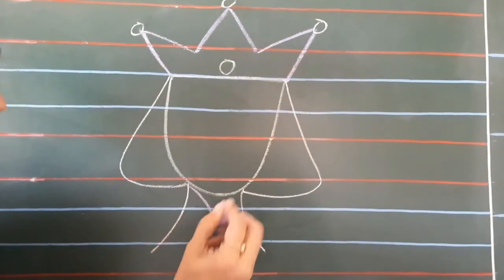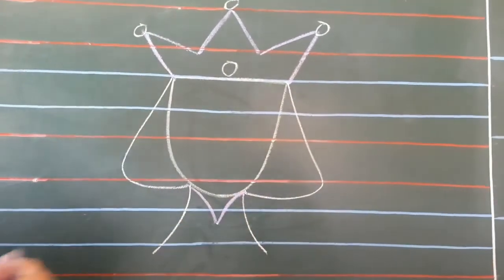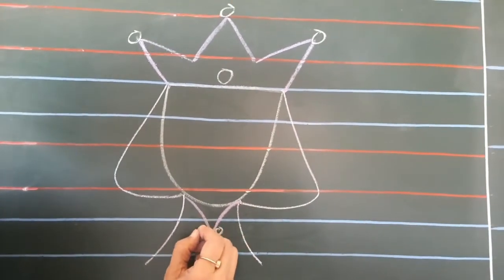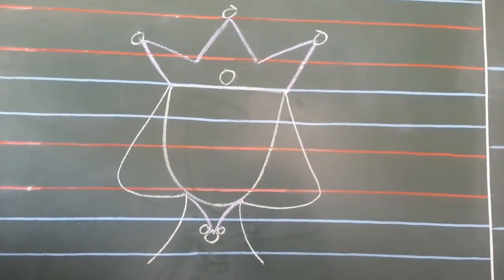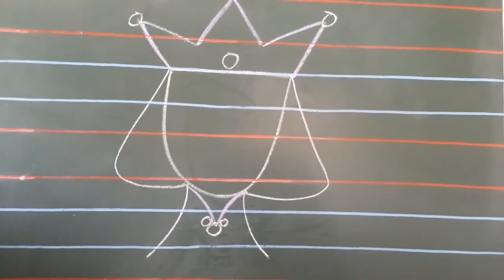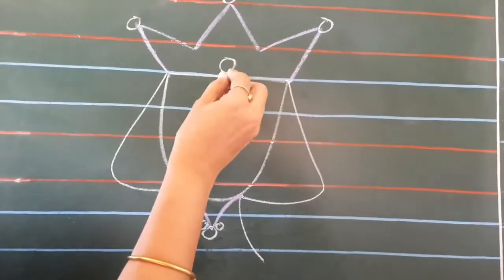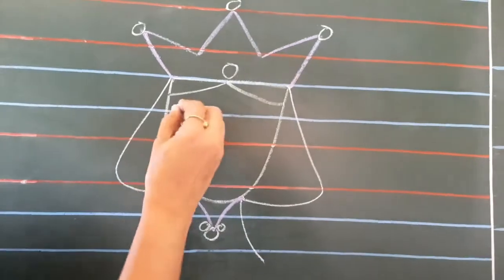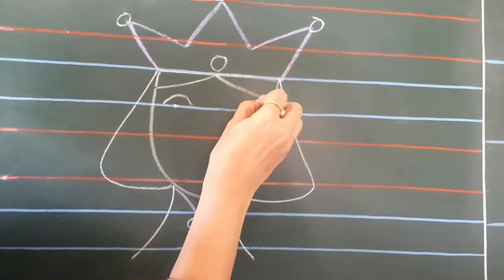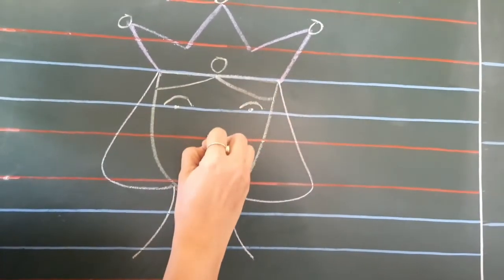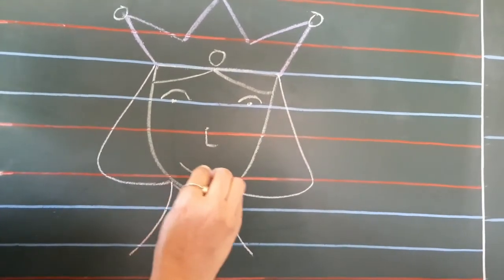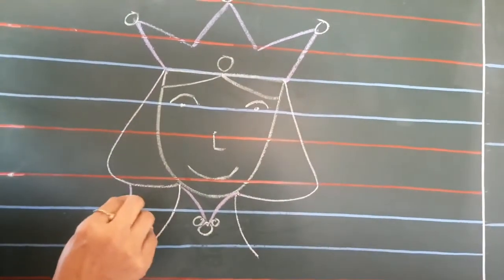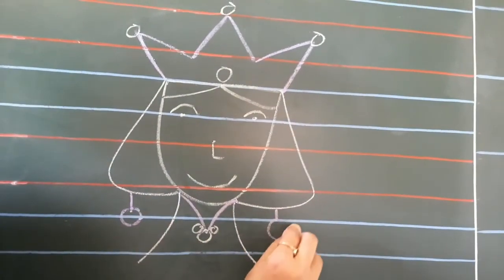And what do queens wear in the neck? They wear a necklace. So, we will draw a necklace. And then, now we will draw hair partition and eyes of the queen, nose, smiley face, and we will draw earrings of the queen.